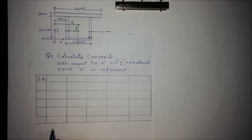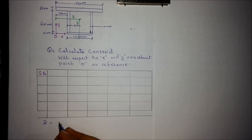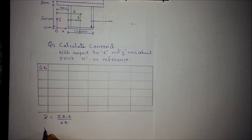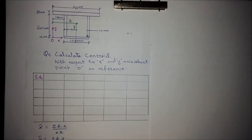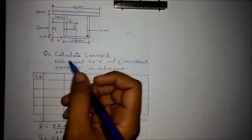We know that the formula for centroid about the x axis is the summation of area into lever arm over summation of area. The centroid about the y axis formula is summation of area into y over summation of area. So from this figure we need to extract the data for area times x, summation of area times y, and summation of area.